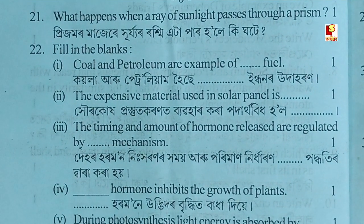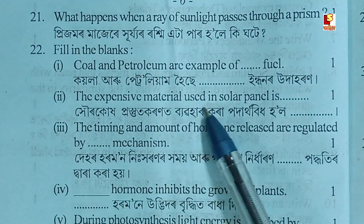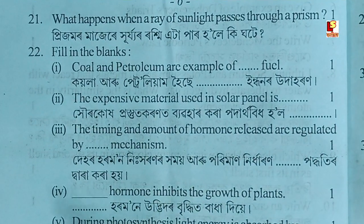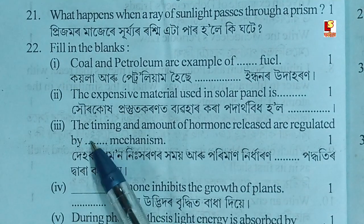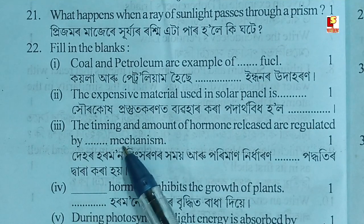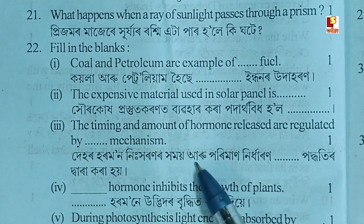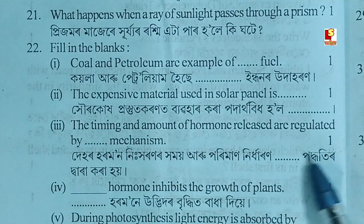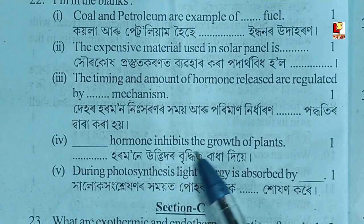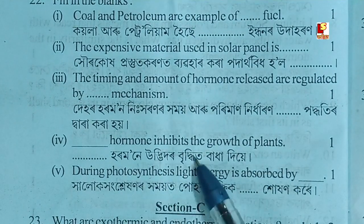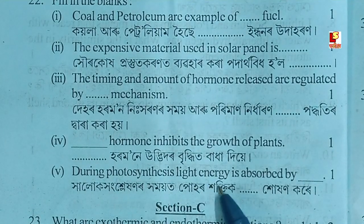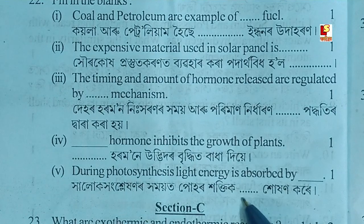The expensive material used in solar panels is a very good product. The timing and amount of hormone released is regulated by a feedback mechanism. The hormone inhibits the growth of plants.